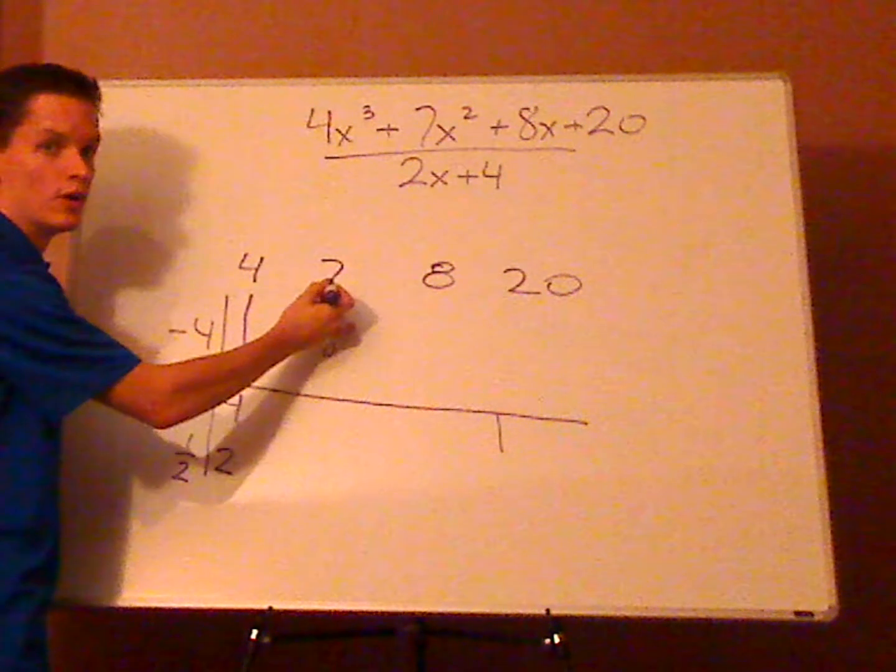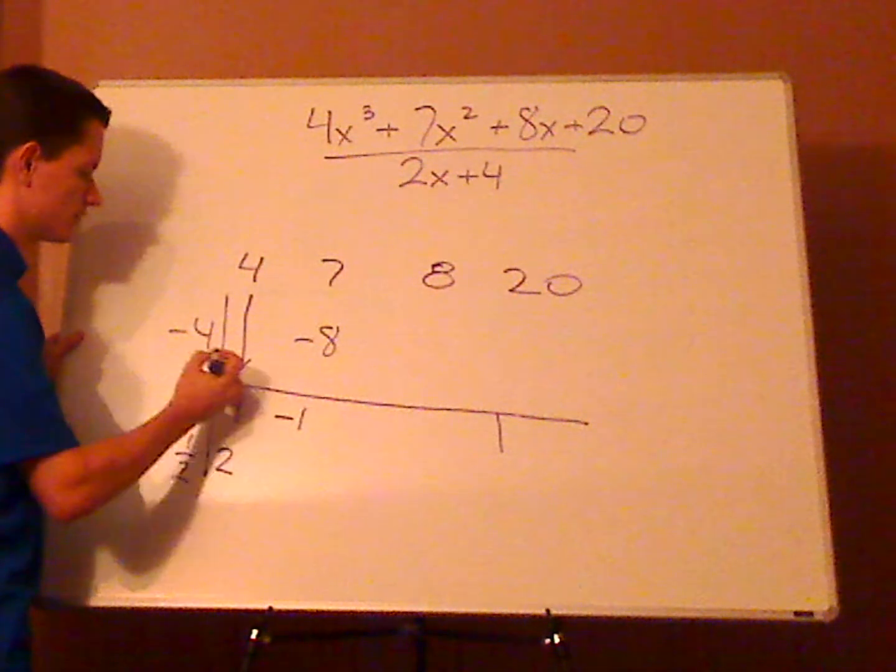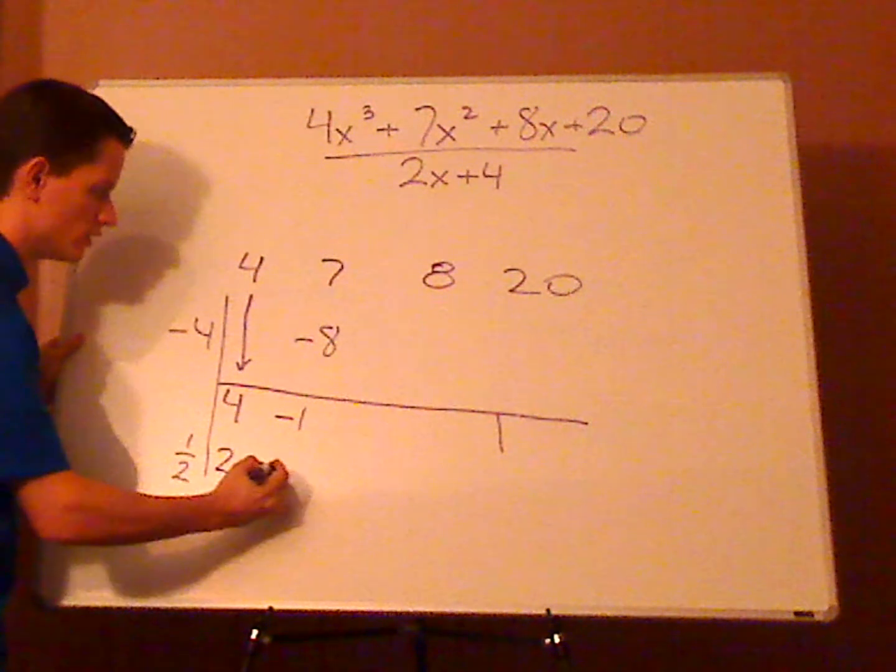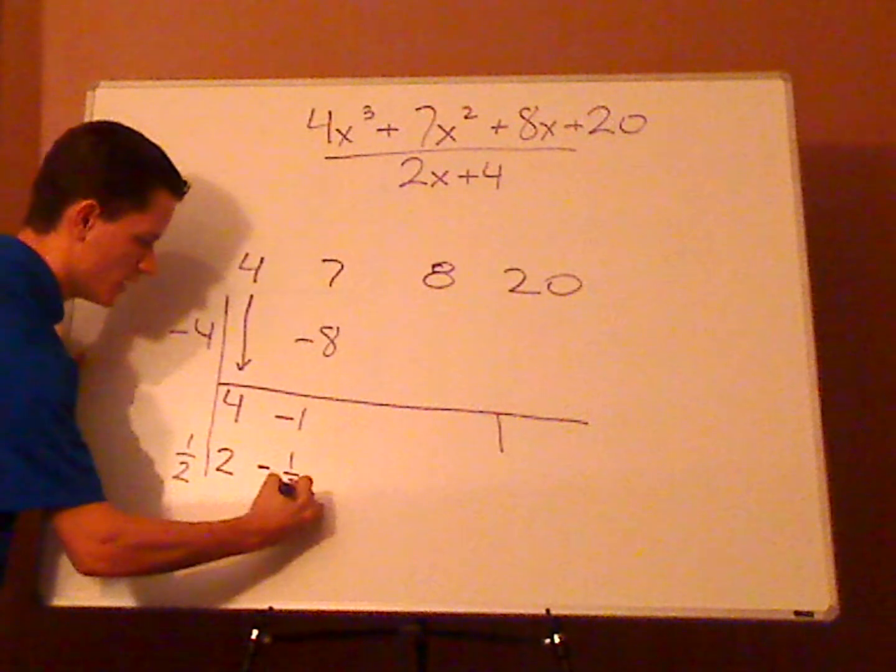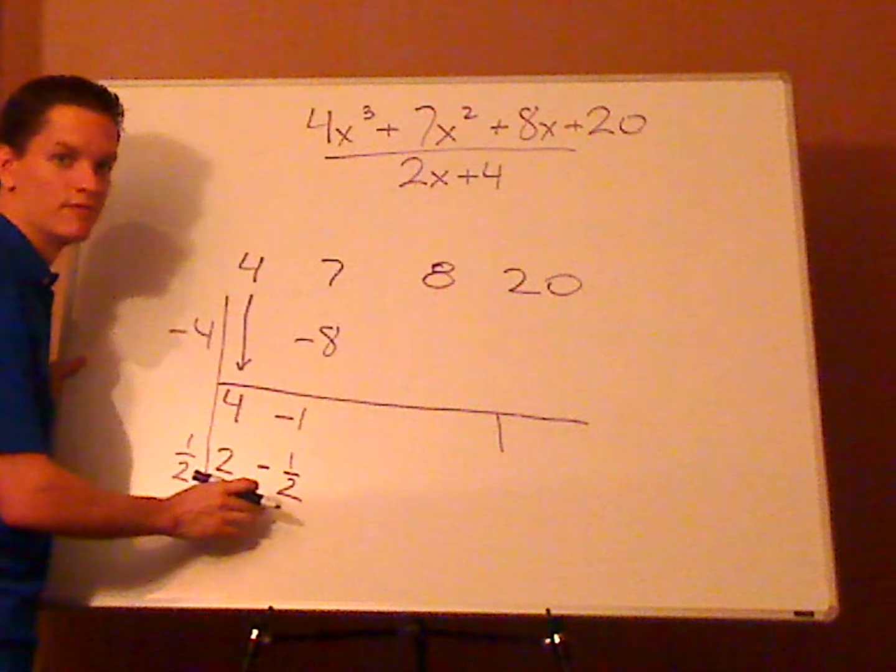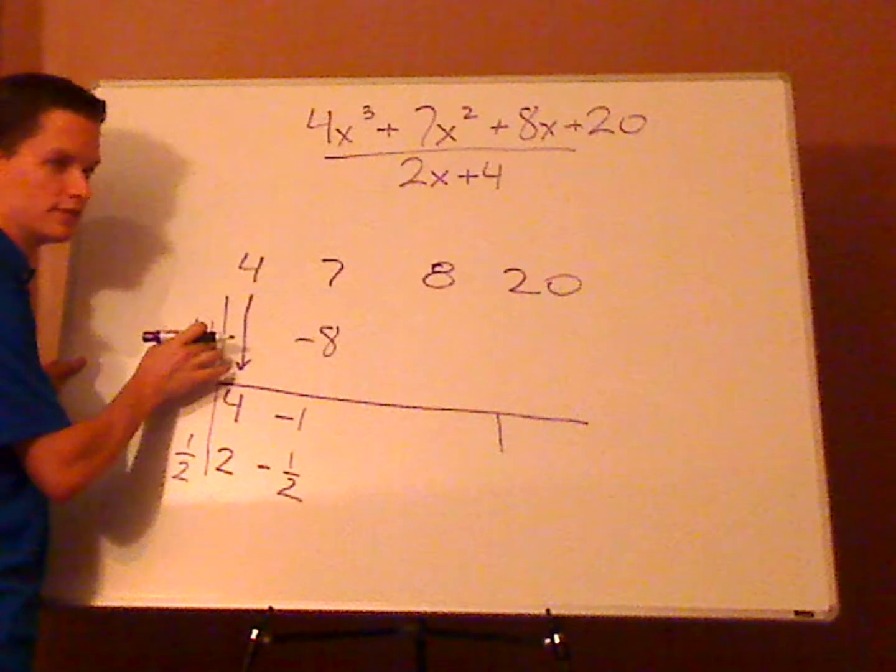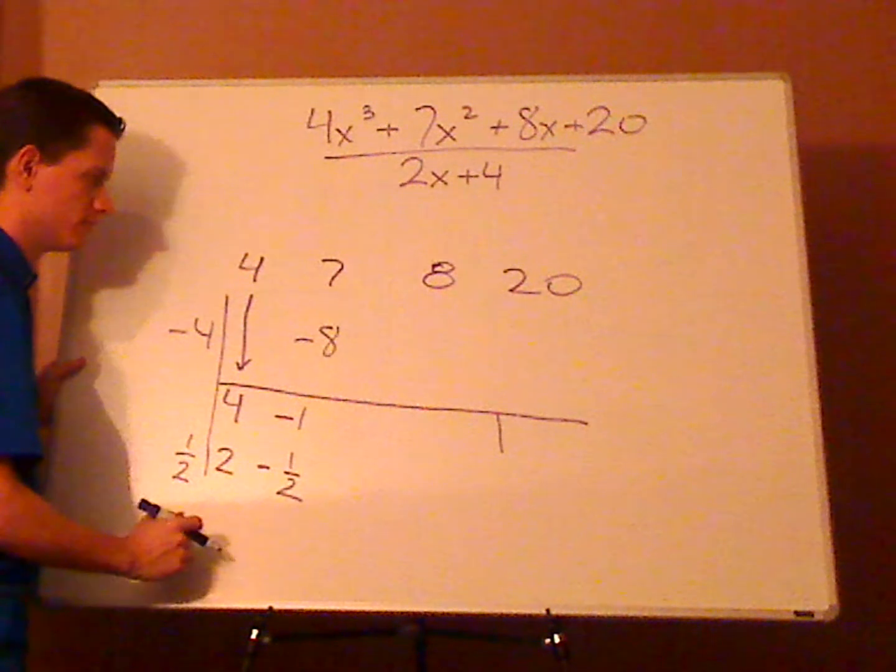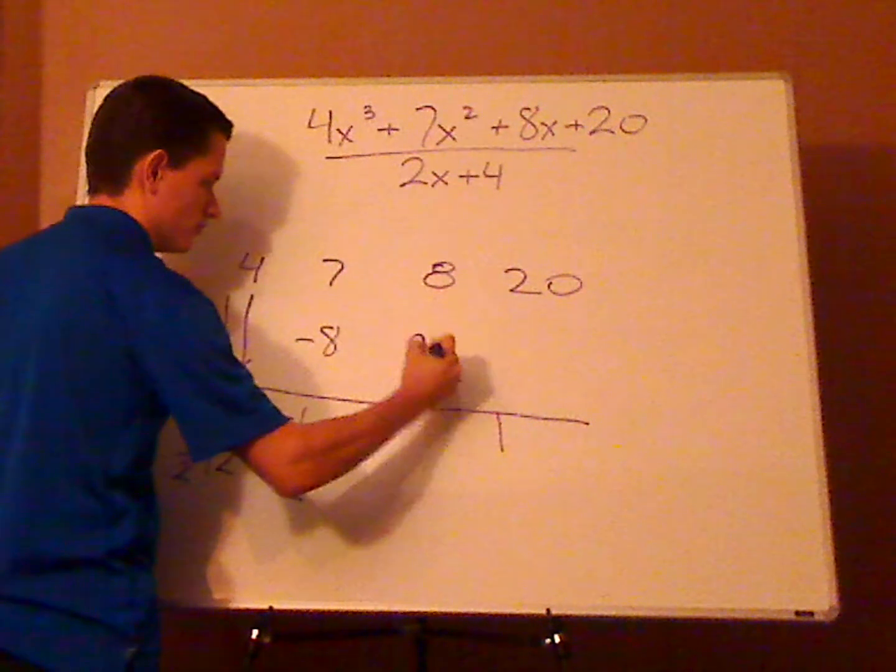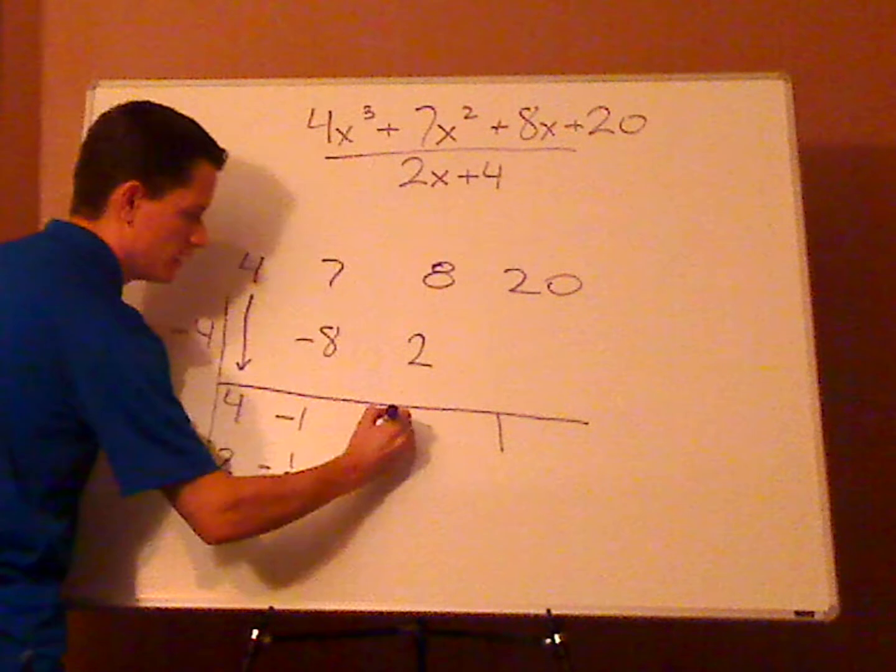Now, add what's 7 plus negative 8? Negative 1. Then do the same thing. Times it by 1 half. So, that would be a negative 1 half. Do the same thing as you did before. Take this. Multiply it to negative 4. What's negative 4 times a negative 1 half? Positive 2. Then add 8 plus 2 is 10.